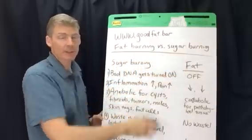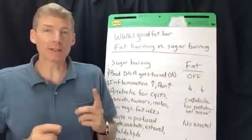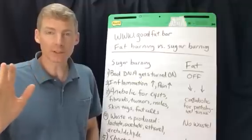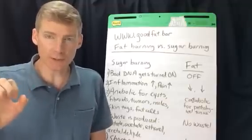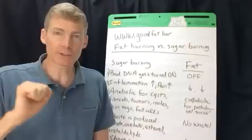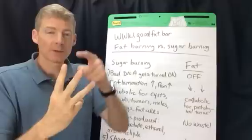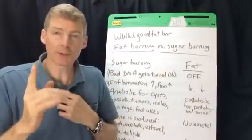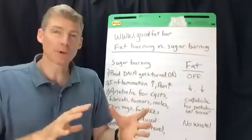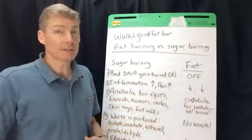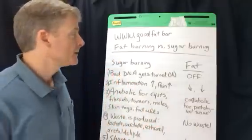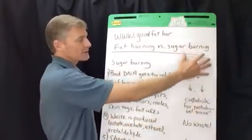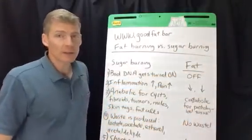This video is about fat burning versus sugar burning. There are only two fuels that your body uses to make energy: fat and sugar. Protein burns like sugar and carbs are sugar, so of the three macronutrients — protein, fat, and carbs — protein and carbs both digest the same way as sugar. So your body is either burning sugar or burning fat.